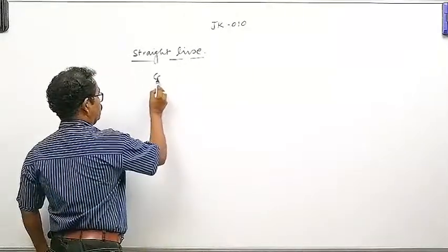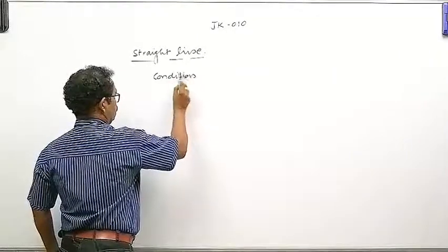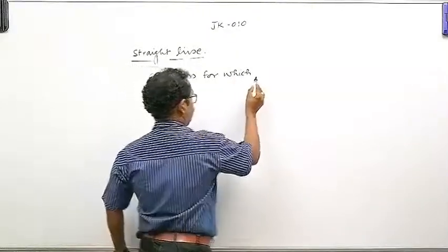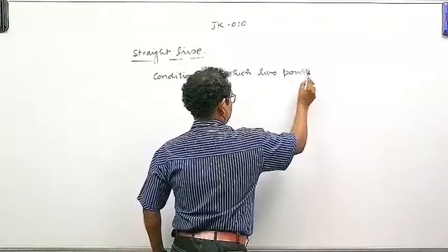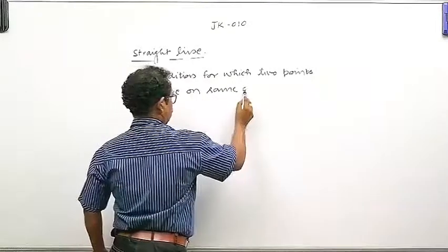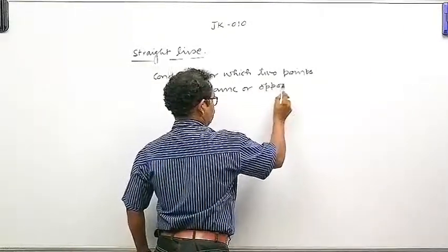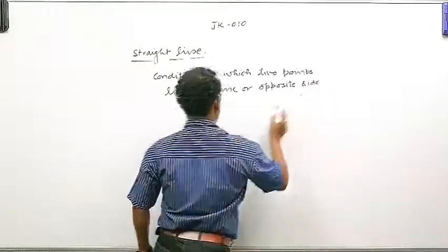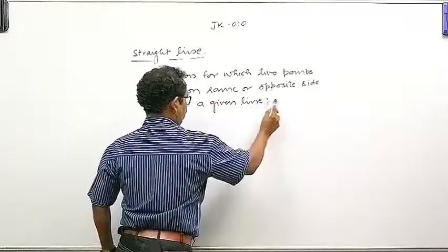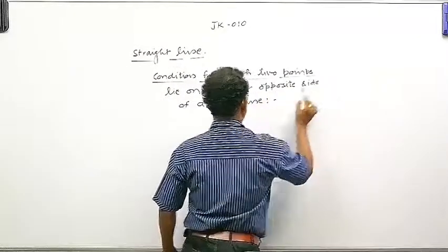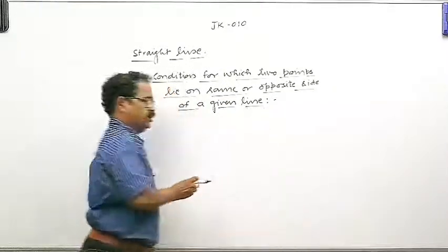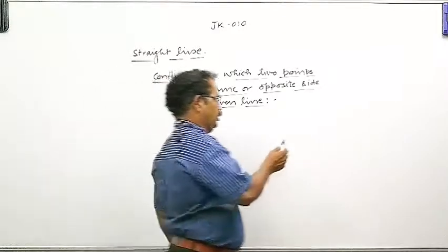Now, condition for which two points lie on same or opposite side of a given line. So let's start.